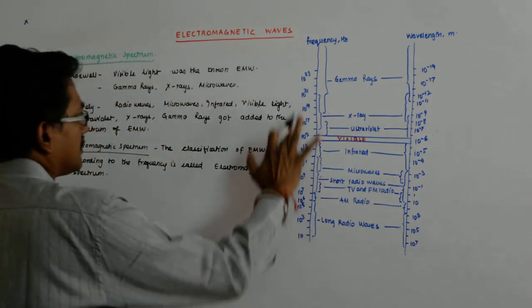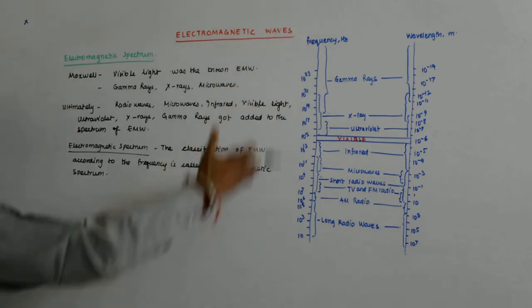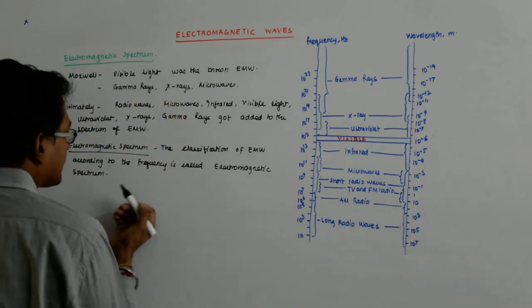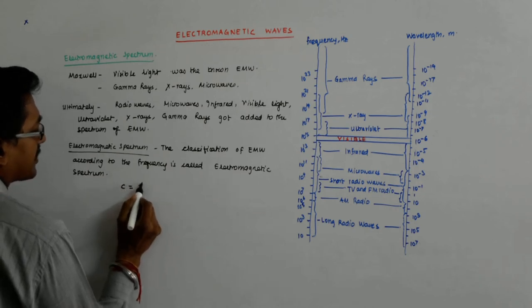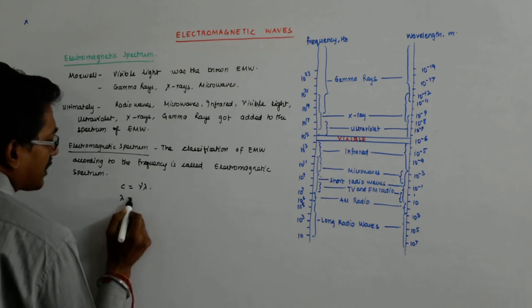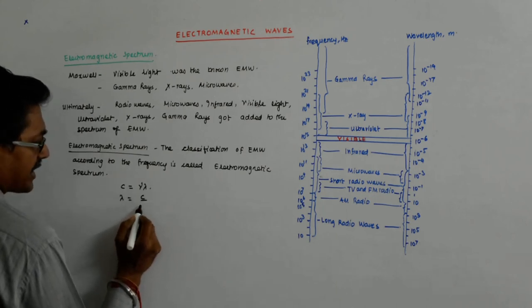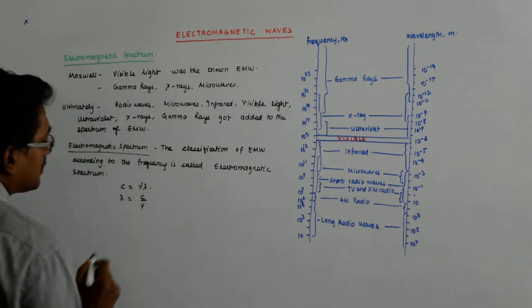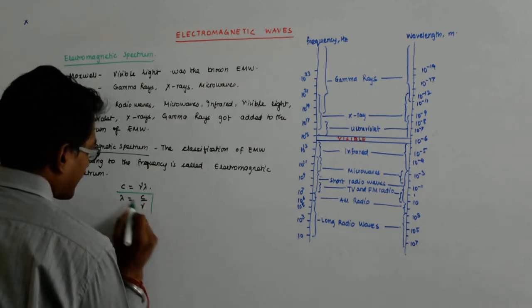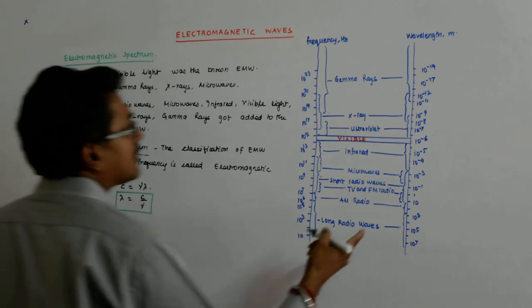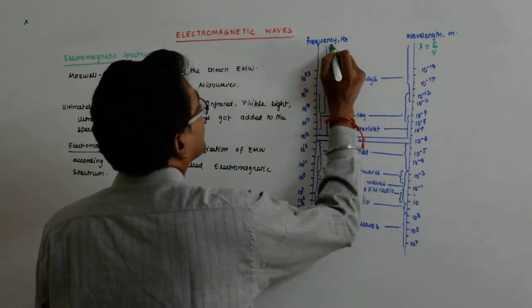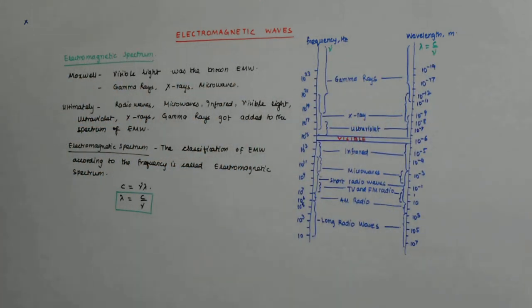This is the frequency and the corresponding wavelength is on the right-hand side. And how does it correspond? The correspondence is pretty simple. C is equal to nu lambda. So if I want to find out lambda, I have to take the speed of light and divide it by the frequency. The right-hand side is nothing but lambda, which is given by C upon nu.